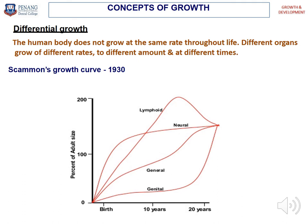The next concept is differential growth. The human body does not grow at the same rate throughout life — different organs grow at different rates, to different amounts, and at different times. Looking at the Scammon growth curve created in the 1930s, there are four curves: lymphoid, neural, general, and genital. The neural — meaning the central nervous system — is well developed at birth and grows rapidly during the early years of life, being essentially complete around 10 years of age, while the reproductive organs do not begin to increase in size until puberty.